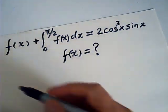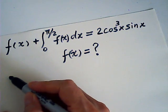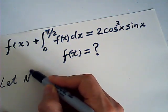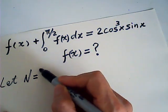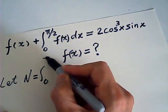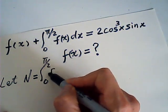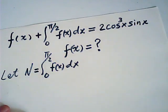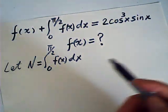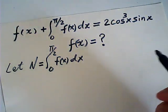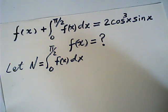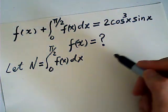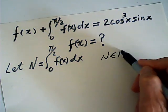So we can let N be the definite integral from 0 to pi/2 of f of x dx, because the definite integral, as I said, is a numerical value. And N is a real number.